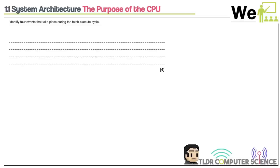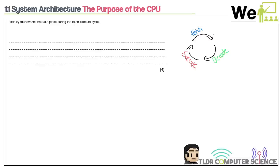Looking at this first question on system architecture — specifically the purpose of the CPU. The purpose is to process instructions and data. The question identifies four events that take place in the fetch-execute cycle. The three parts of the cycle are: fetch, decode, and then execute. What is being fetched? Instructions — instructions are being fetched.